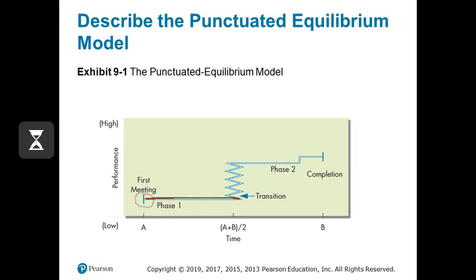Then at the halfway point, there's an 'oh my gosh, we have to do this work' moment — a transition where productivity ramps up a little bit. But then we fall back into a sense of inertia. So we have a moment of urgency, then a little more inertia, and then as we get to the end, there is a big jump where the group markedly accelerates performance to get the job done.